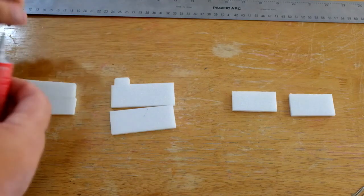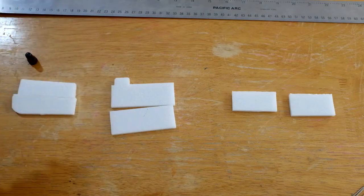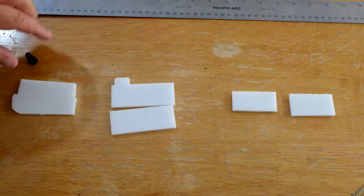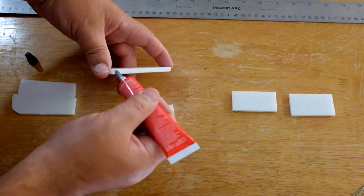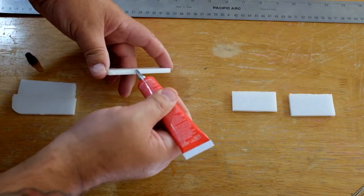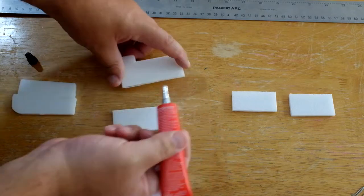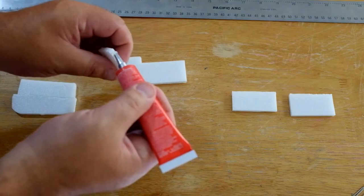First of all, you want to keep your tip really clean because the way this glue works is it contacts itself after it's dried. You want to apply glue to both sides of the surface that you're going to join.